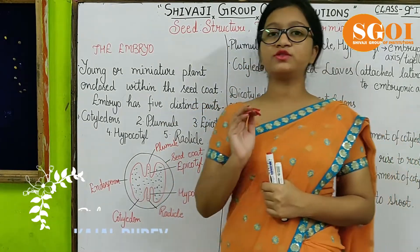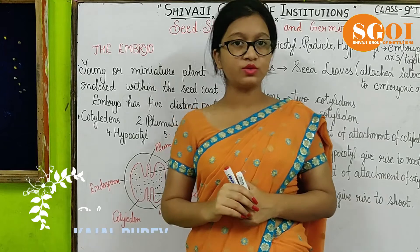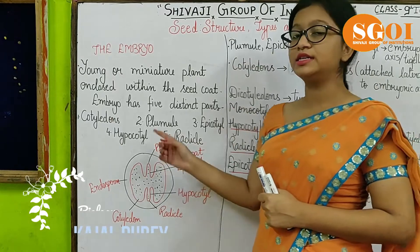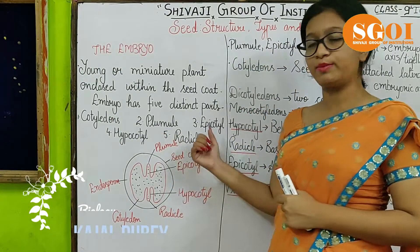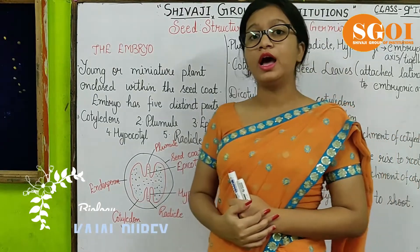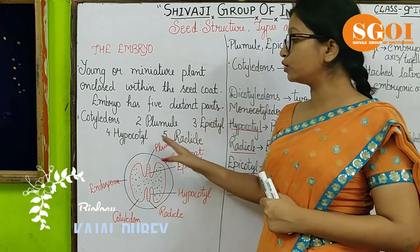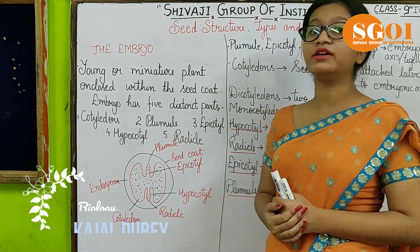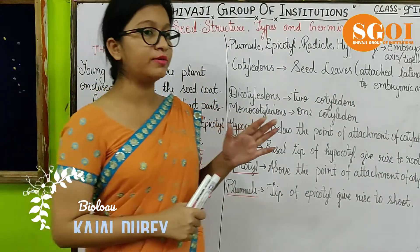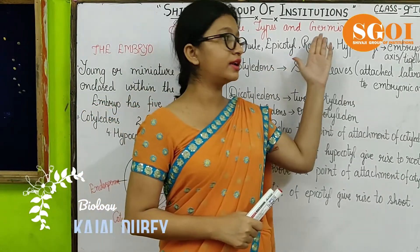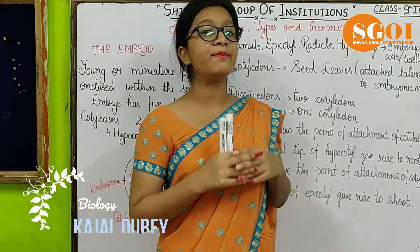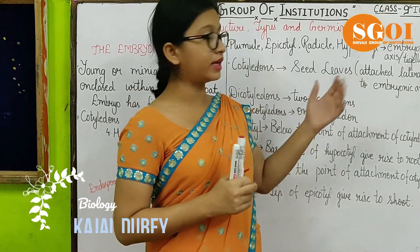The embryo has five important parts: first is cotyledon, second is plumule, third is epicotyl, fourth is hypocotyl, and fifth is radicle. Four of these parts — plumule, epicotyl, radicle, and hypocotyl — combine together to form the embryonic axis, also called the tegulum.